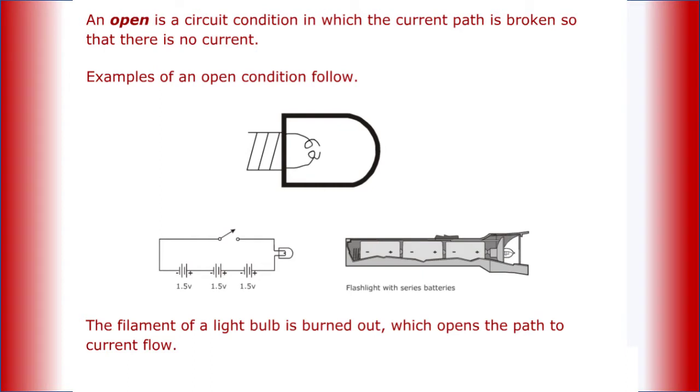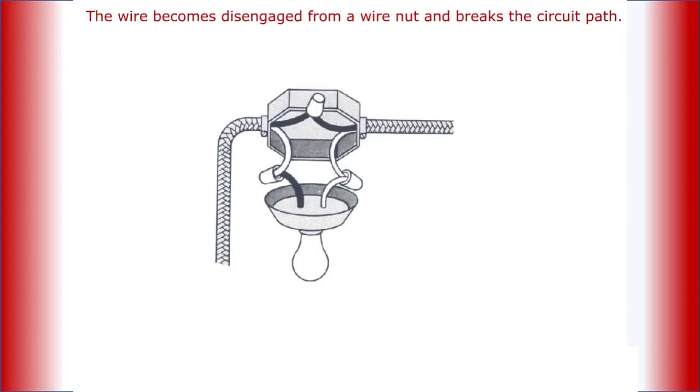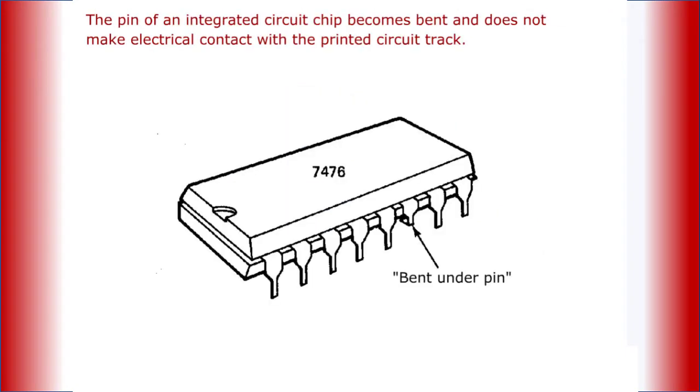The filament of a light bulb burns out, opening the path to current flow. A wire becomes disengaged from a wire nut and breaks the circuit path. The pin of an integrated circuit chip becomes bent and does not make electrical contact with the printed circuit track.